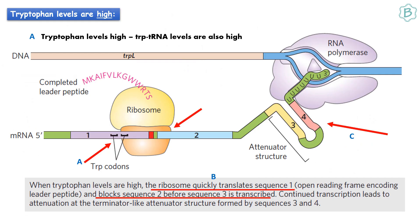When tryptophan levels are high, tryptophan-tRNA levels are also high. In the leader peptide region there are two tryptophan codons. When tryptophan-tRNA levels are high, the ribosome will quickly translate region 1 and block region 2. Thus, region 2 is not available to base pair with region 3. This allows regions 3 and 4 to form a base pair, forming the transcription termination signal. Thus, when tryptophan levels are high, this causes termination of transcription.